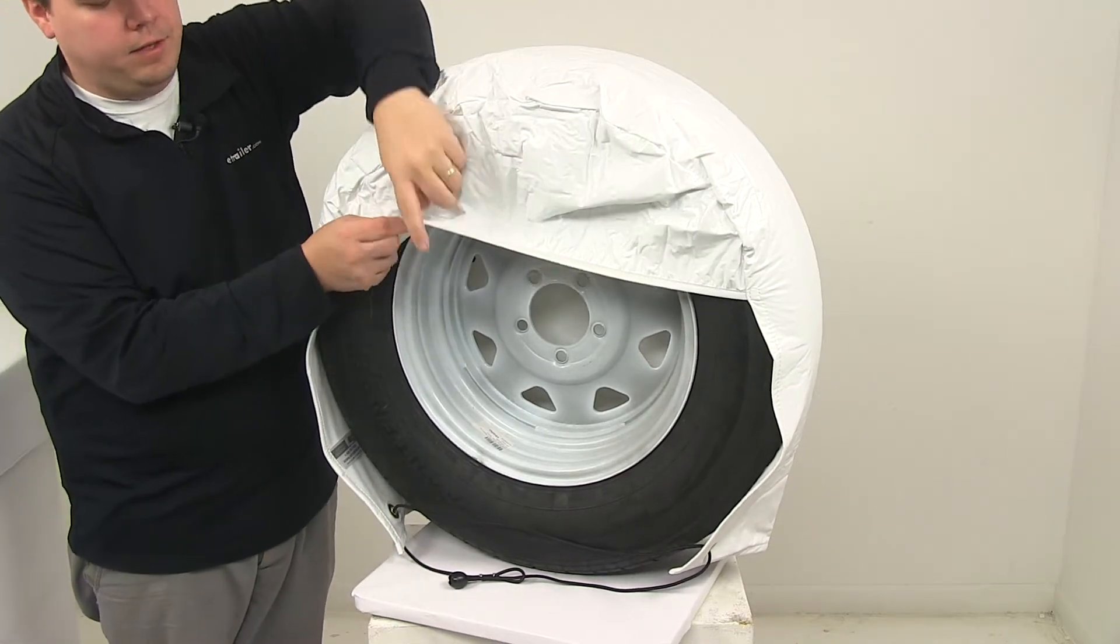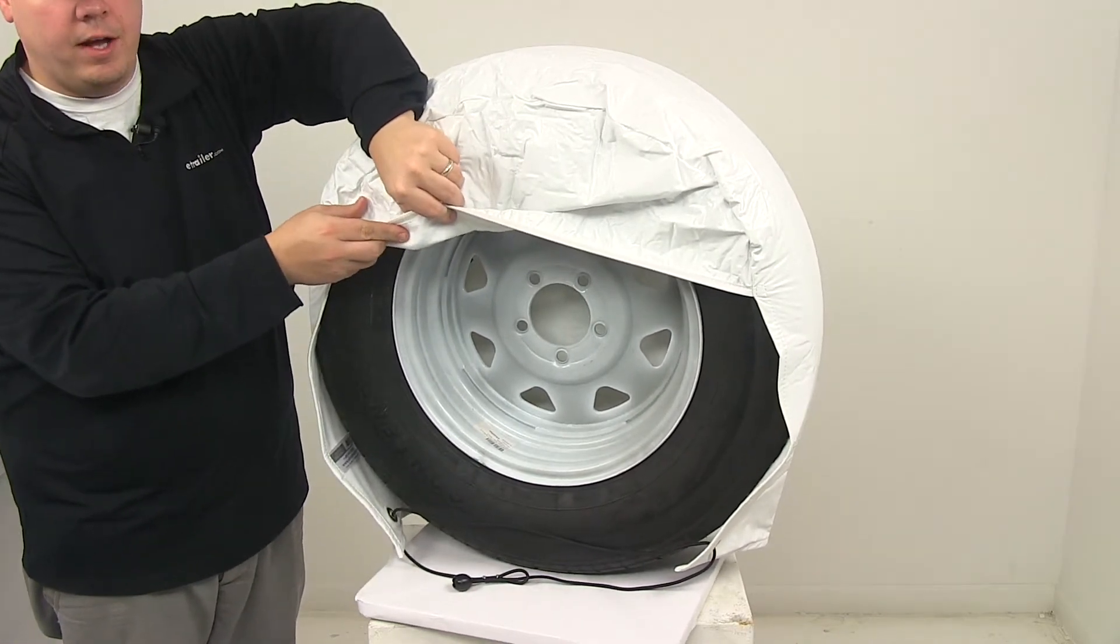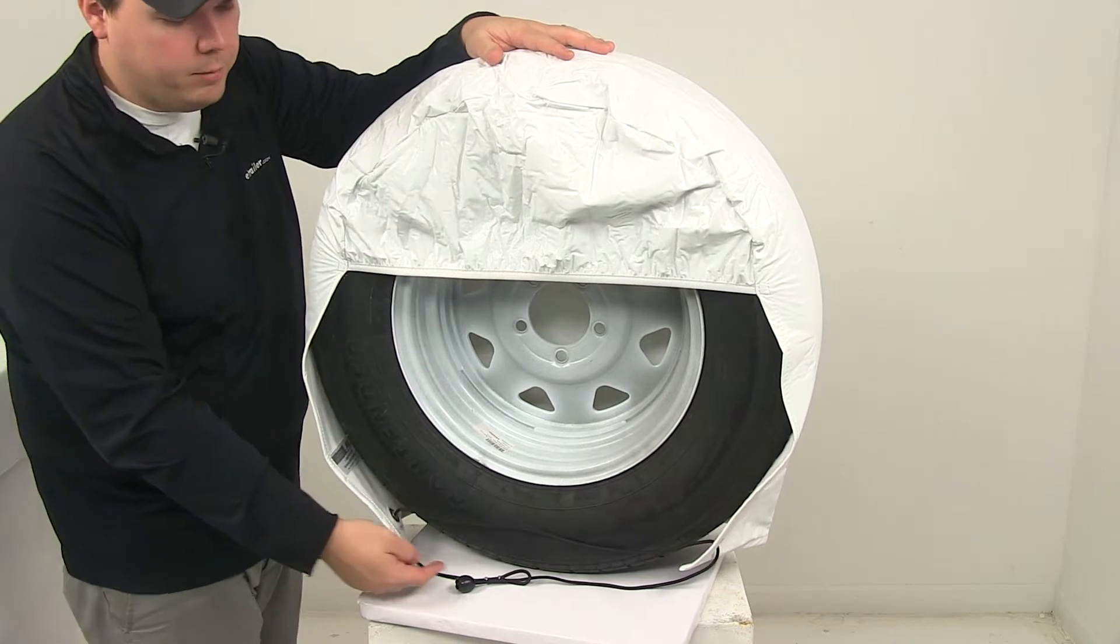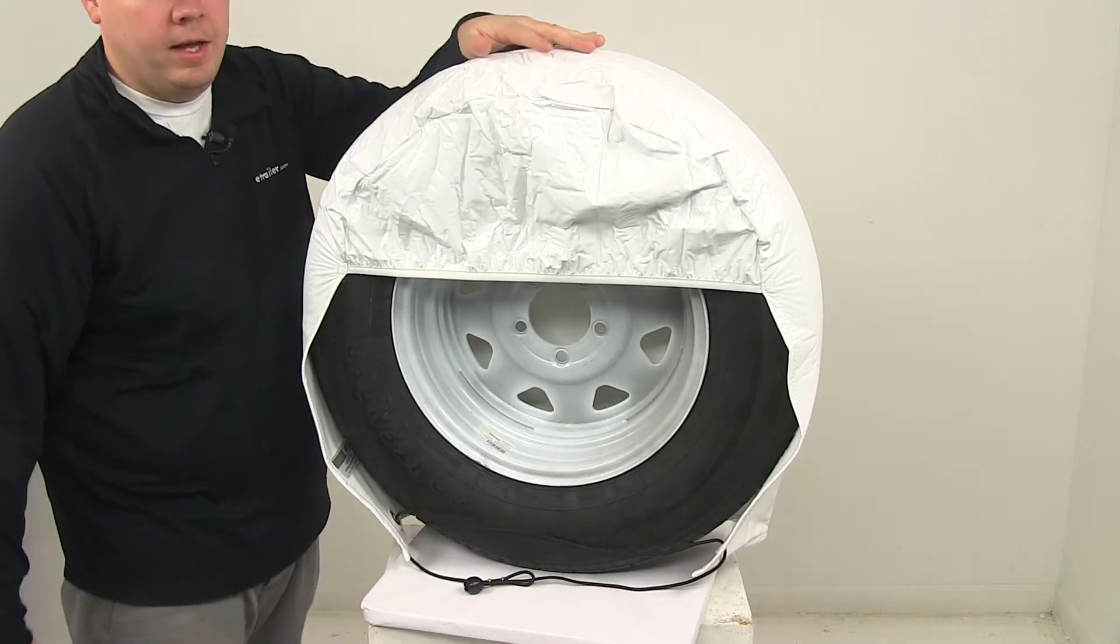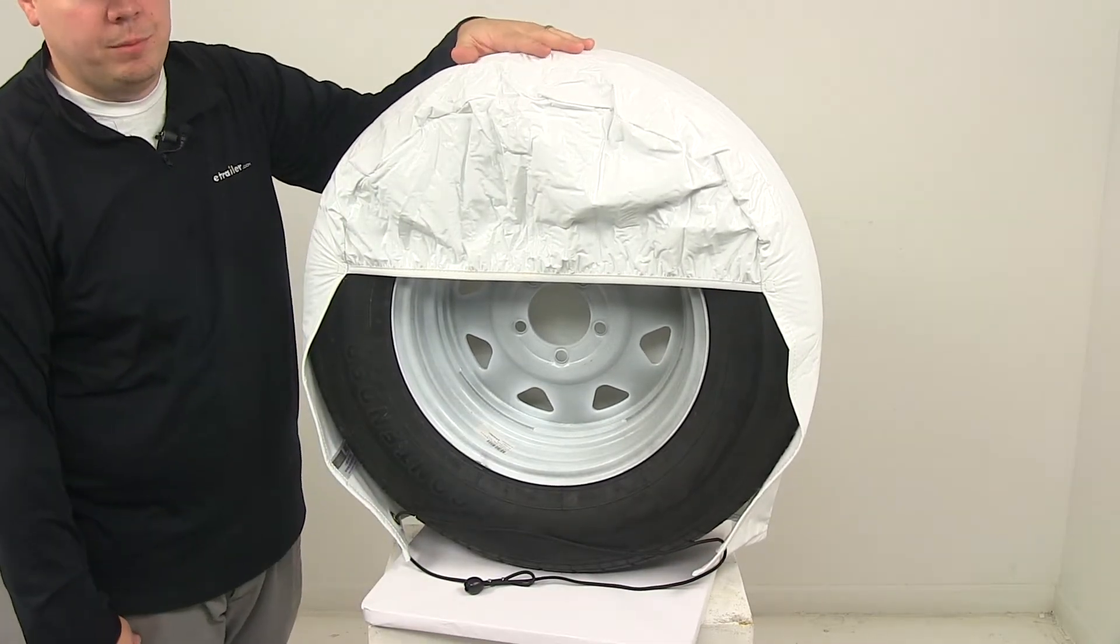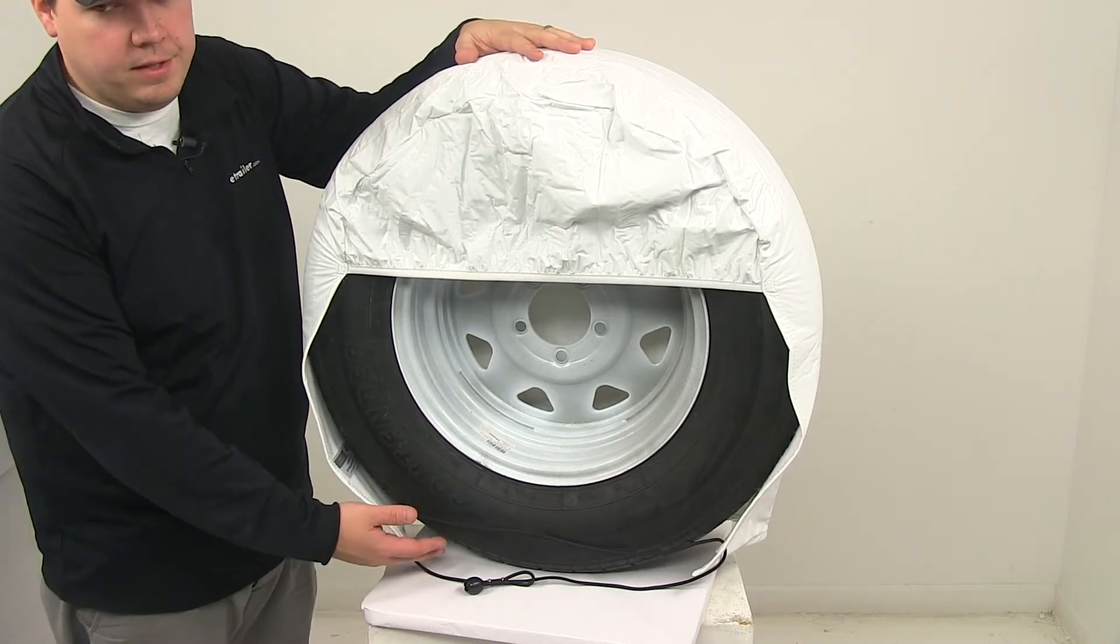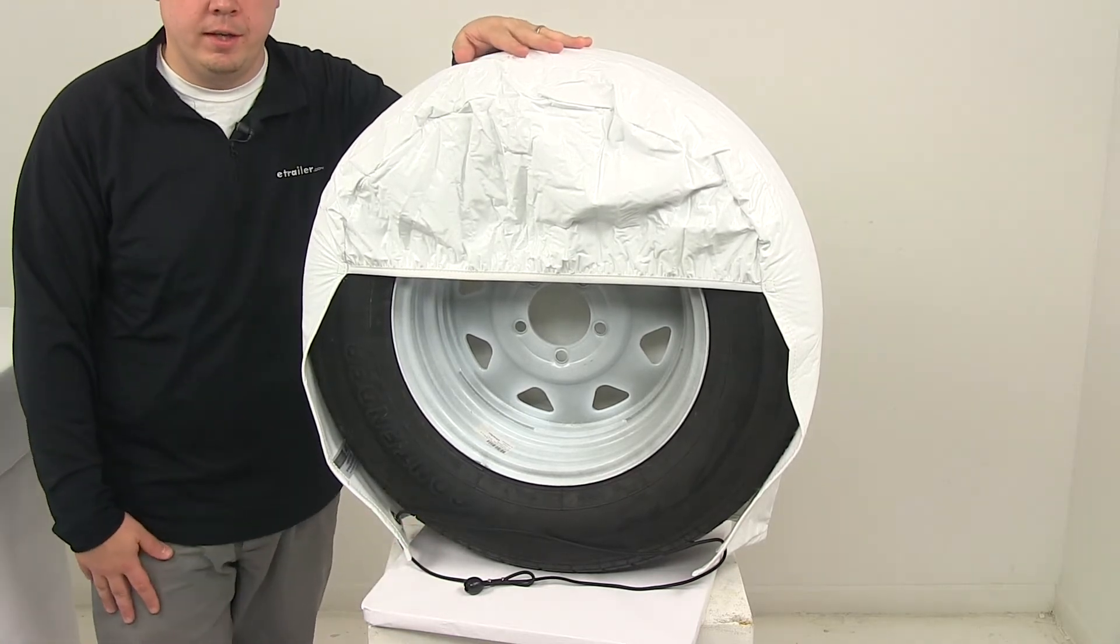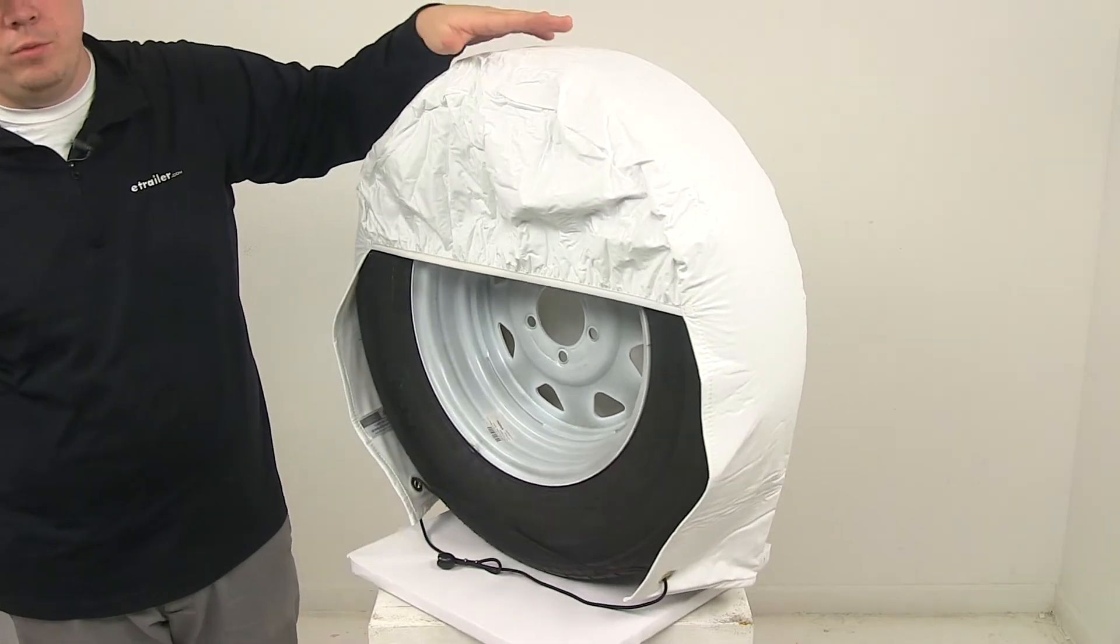On the inside of the entire cover is a very soft non-scratch lining. On the bottom is where we'll find those grommets. And the unit comes with the bungee ball fastening system. This system offers a tailored look and eliminates losing the covers in windy conditions.